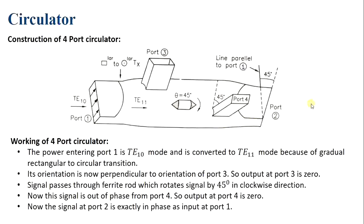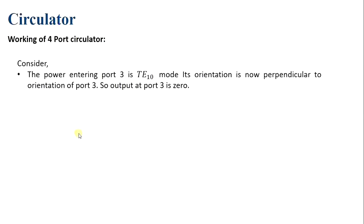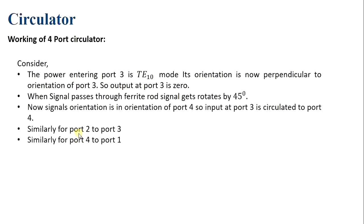The signal comes out of port 2, which is exactly in phase with the input at port 1. In this way, the signal passes from port 1 only to port 2, and not to port 3 or port 4. Similarly, if input is provided at port 3, the signal passes through the ferrite rod, gets rotated by 45 degrees, and its orientation matches port 4 — so input at port 3 is circulated to port 4. Likewise, input at port 2 gives output at port 3, and input at port 4 gives output at port 1.